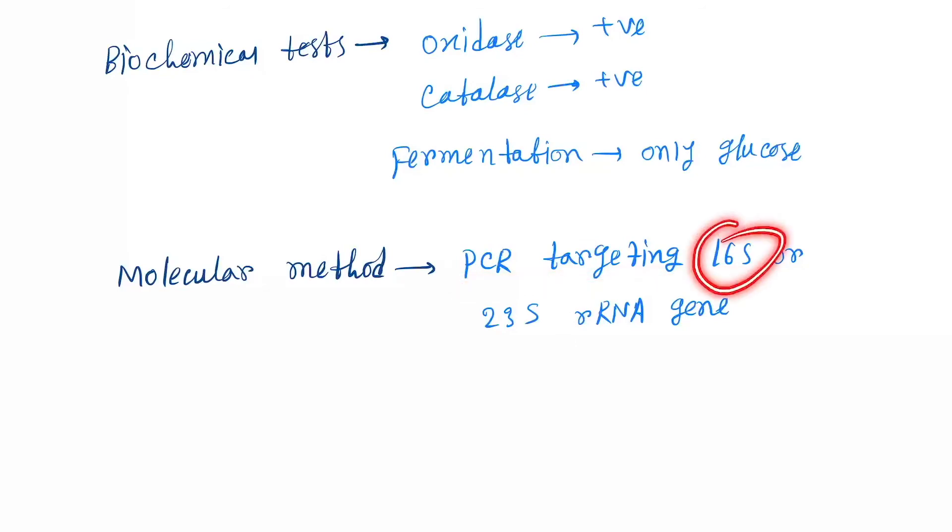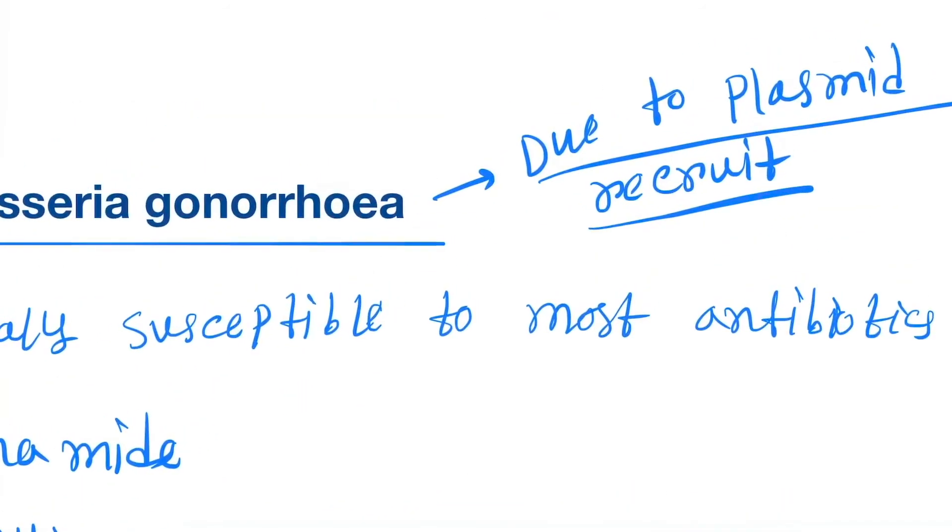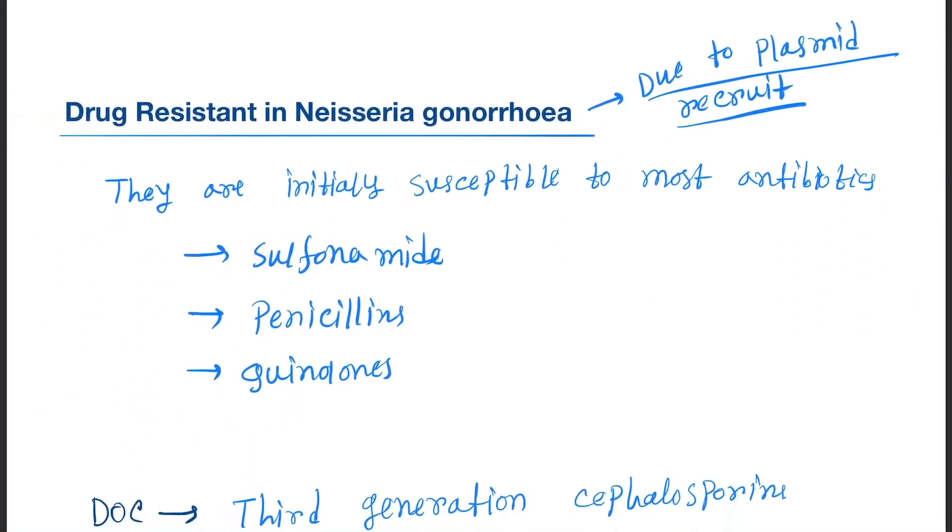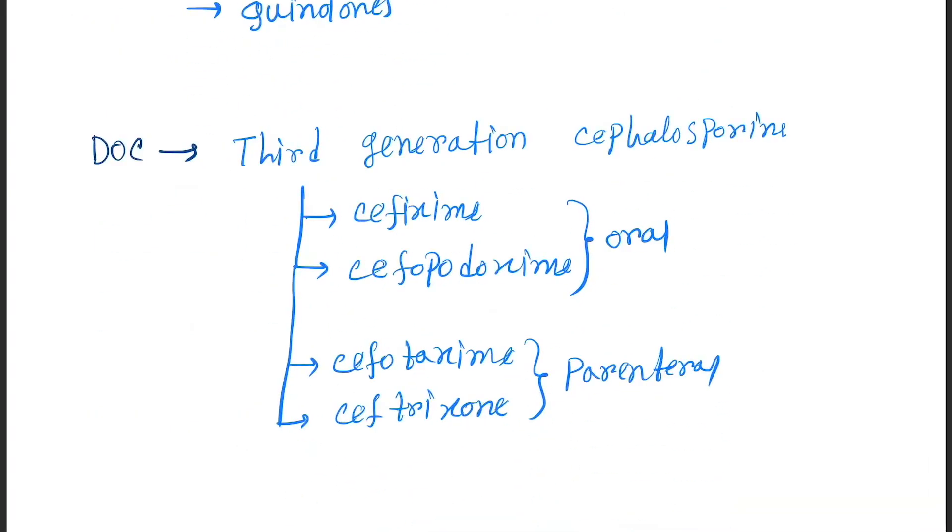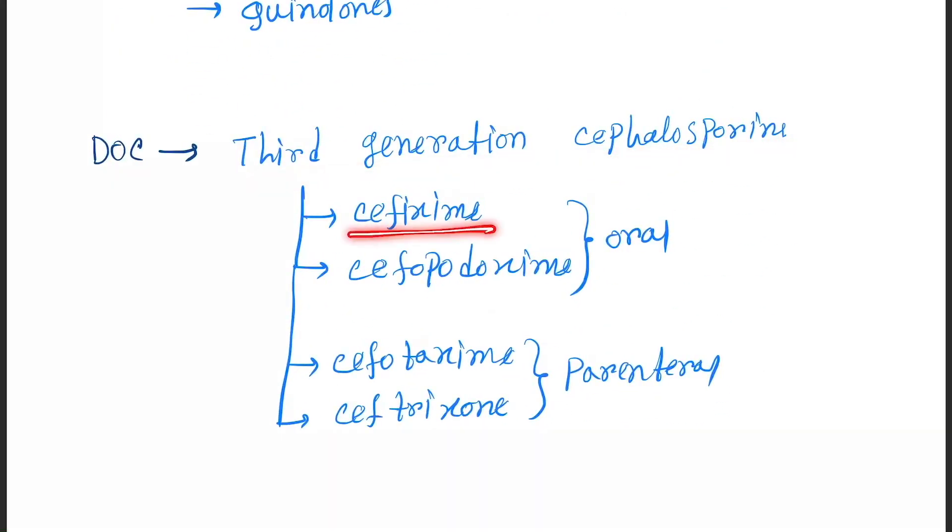Important thing is drug resistance in Neisseria gonorrhoeae. This occurs due to plasmid-mediated resistance, which does not occur in Neisseria meningitidis. They are initially susceptible to most antibiotics like sulfonamides, penicillins, and quinolones. Drug of choice will be third-generation cephalosporins like cefixime and cefpodoxime (oral), and cefotaxime and ceftriaxone (parenteral).